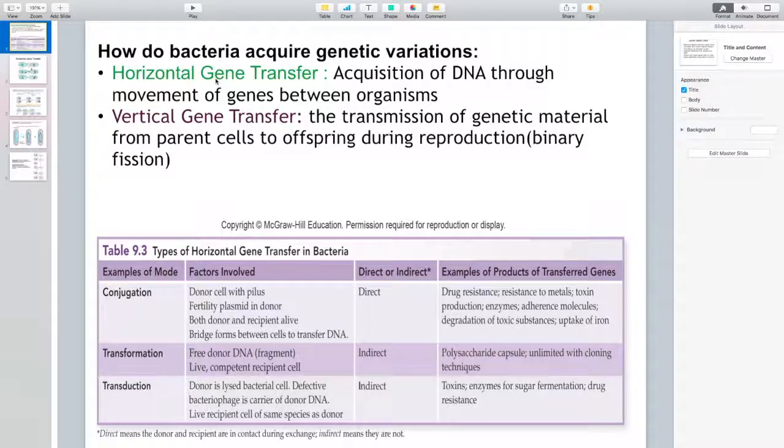When it comes to horizontal gene transfer, bacteria have various methods to accomplish that. One of them is referred to as conjugation. The second one is transformation. And the third one is transduction.